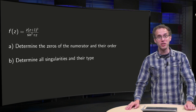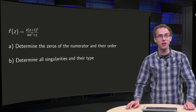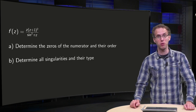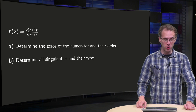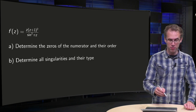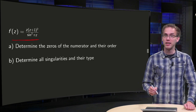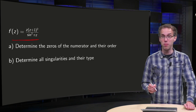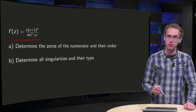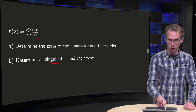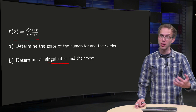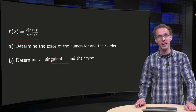Try to answer the following questions yourself first, then you can use this video to see whether your answers are correct and whether you have included all steps. Question A: we have a function f of z. Determine the zeros of the numerator and their order, and Question B: determine all the singularities of f of z and their type. Let's start with Question A.